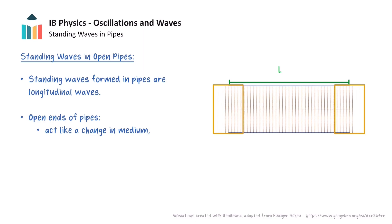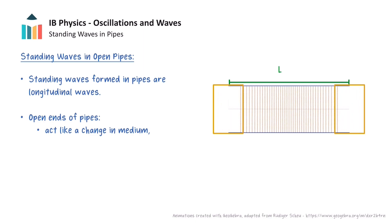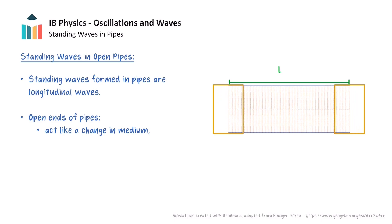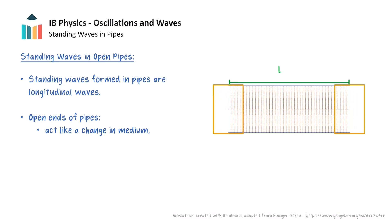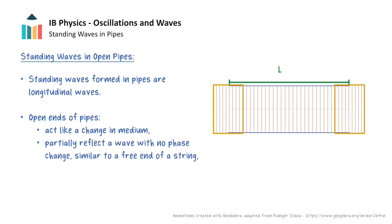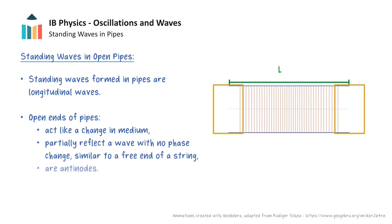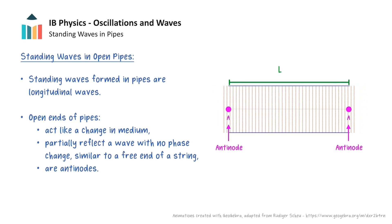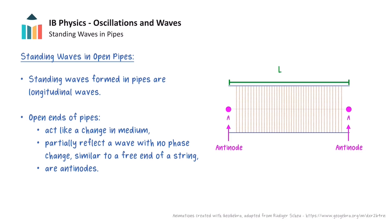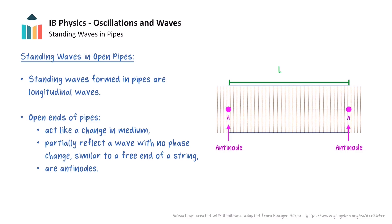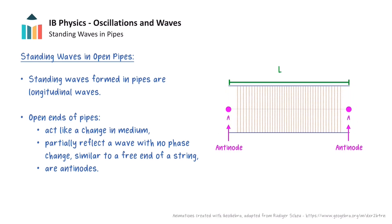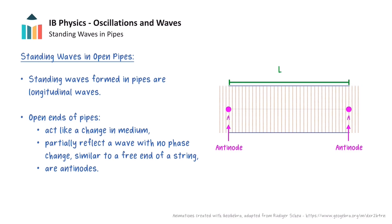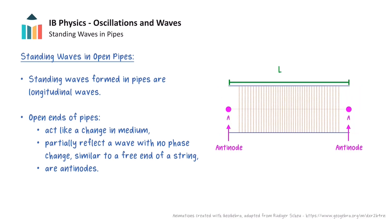The air particles at the open ends of the pipe can flow freely in and out, so the particles can oscillate with maximum amplitude. The open end acts similar to a free end on a string, and so the wave reflects back with no phase change, and the open end of a pipe is always an antinode of the standing wave. With an antinode at each end, these boundary conditions place very specific restrictions on the wavelengths and frequencies of standing waves that can be produced in an open pipe. This is the foundation of how sound is produced in wind instruments such as flutes and other woodwind instruments.